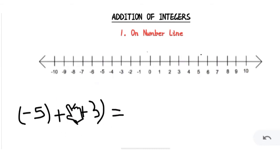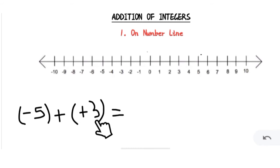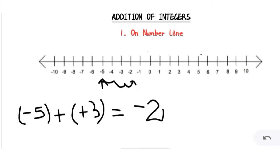Let's take another example: (-5) + (+3). Here I have changed the second number only — previously it was minus 3, now it is plus 3. So first we go to minus 5, and since plus 3 is a positive integer, we will move three steps towards the right — 1, 2, and 3 — which brings us to the answer minus 2.